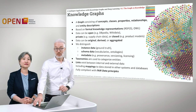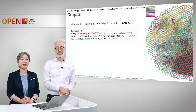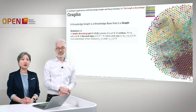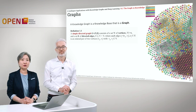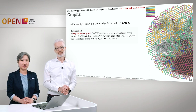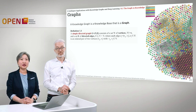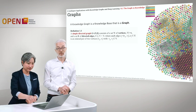Now let's go deeper into the theory and look into the graph within the Knowledge Graph. A Knowledge Graph is a knowledge base that is a graph. We define a simple directed graph G as the tuple (V, E), where V are the vertices of size N, and E, the directed edges, is a Cartesian product between the set of vertices. Each edge is a tuple V_k (the head or subject) and V_l (the object or tail). E is an ordered pair, so we cannot interchange V_k and V_l, simply because it is a directed graph.